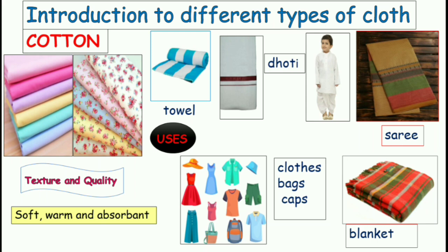From cotton cloth we get different things. Some of these are stitched and some are prepared to form whatever we want. For example, the doti, the saree — they are prepared in that way. Our clothes are stitched.